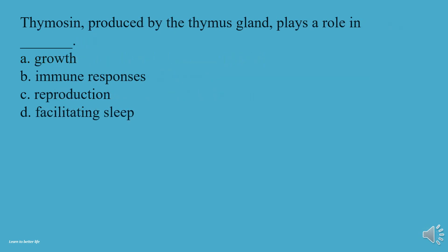Thymosin, produced by the thymus gland, plays a role in what? A, Growth. B, Immune responses. C, Reproduction. D, Facilitating sleep. The answer is B, Immune responses.